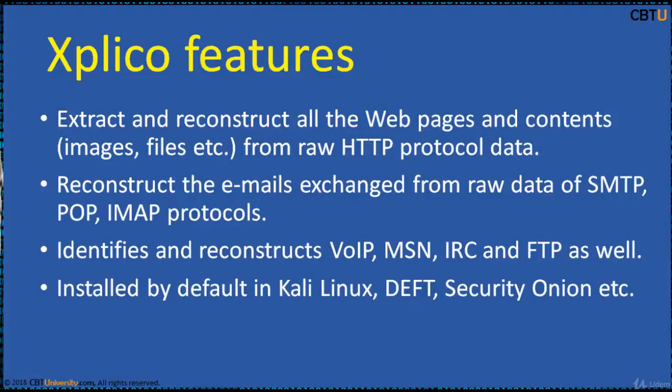Some of the Explico features are: it can extract and reconstruct all web pages and contents like images, files, cookies, etc., from raw data of the HTTP protocol. It can reconstruct emails exchanged from raw data of SMTP, POP, and IMAP protocols. It also identifies and reconstructs WIP, MSN, IRC, and FTP data. It is installed by default in major distributions of digital forensics and penetration testing like Kali Linux, DEFT, and Security Onion.